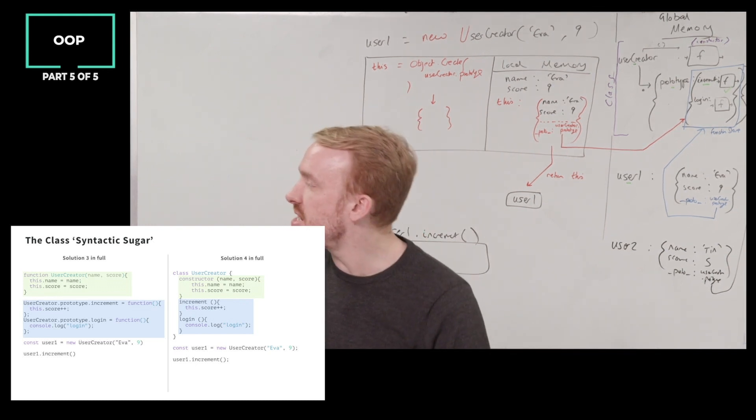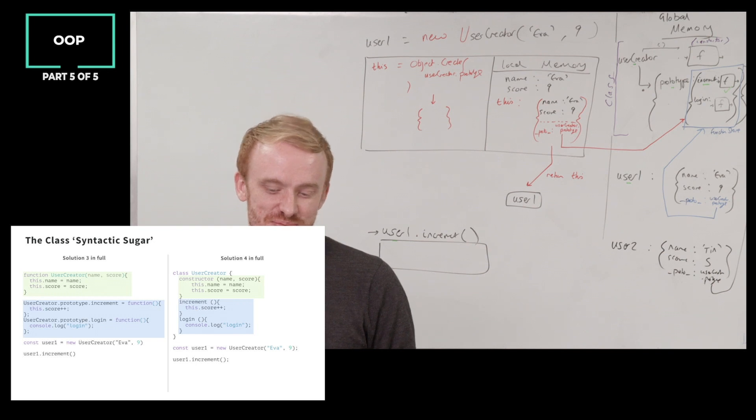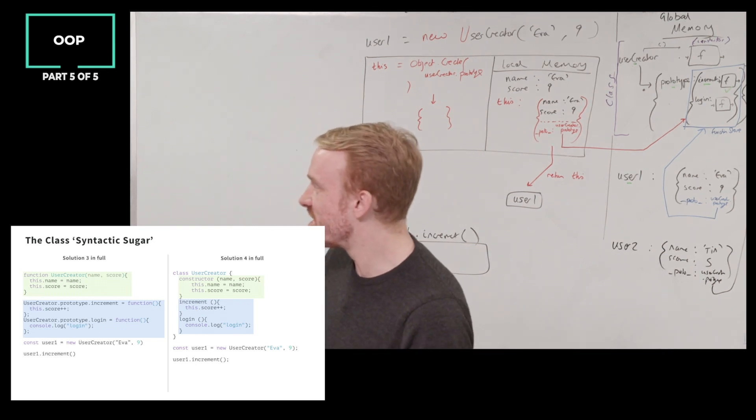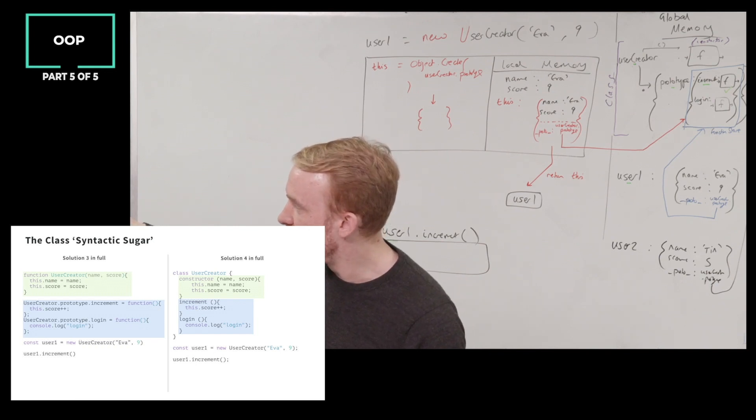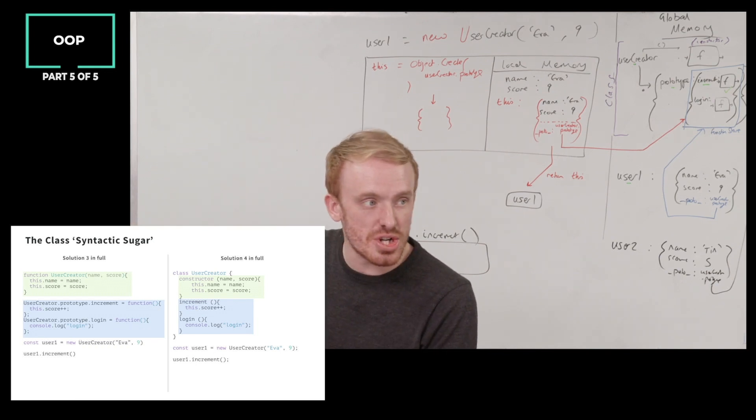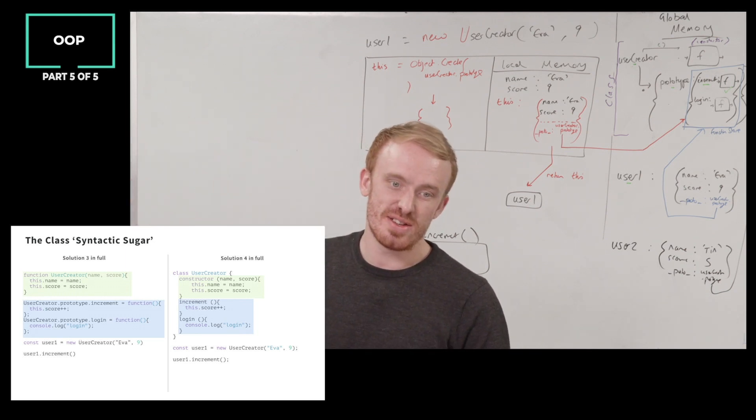We now have an even cleaner version and even less representative of what is happening under the hood. Ah, well, good. So there's the function user constructor piece replaced here. Here's the storing of increment and login. We just list them out. We don't even write the word function. We just literally list them out. No commas. Just throw them in. All right.